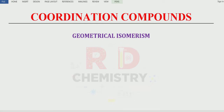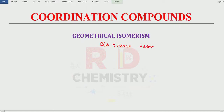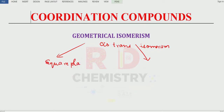Hello students, in this video I'll explain geometrical isomerism. Geometrical isomerism is also called cis-trans isomerism. We are going to study geometrical isomerism for two types of compounds: one is the square planar complexes and the other is the octahedral complexes.